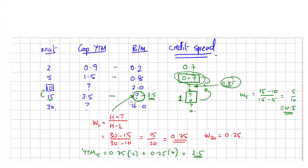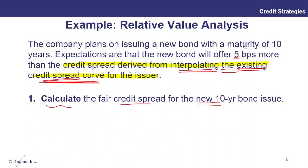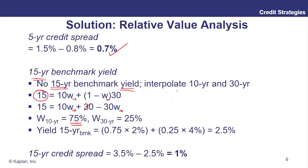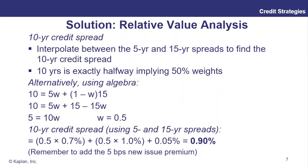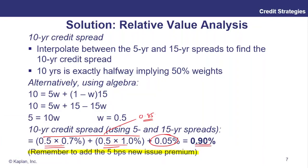Don't forget: the new bond is being issued at a 5 basis points premium to the credit spread we derived from interpolating the existing credit spread curve — that 0.85. So the new bond is being issued at 5 bips higher than that. It would be a shame to drop that right at the end! The solution confirms we take an average of 0.7 and 1 to get 0.85, then add the 5 basis point new issue premium to state the answer: 0.90. In the computer-based exam world, you can't always show your working, so don't drop that final step.